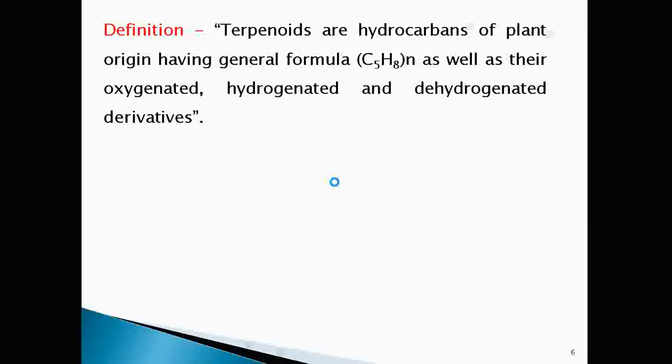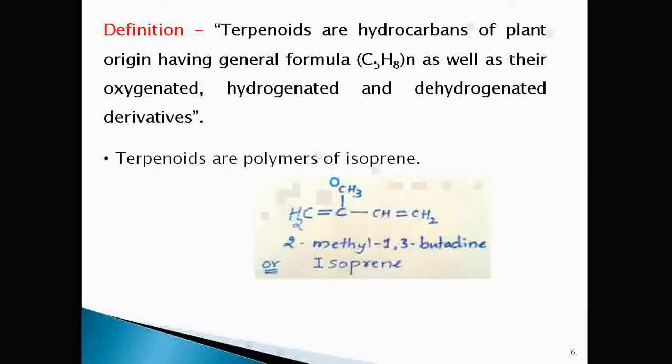Thus, terpenoids are defined as hydrocarbons of plant origin having general formula C5H8 n times as well as their oxygenated hydrogenated derivatives. C5H8 is nothing but isoprene.